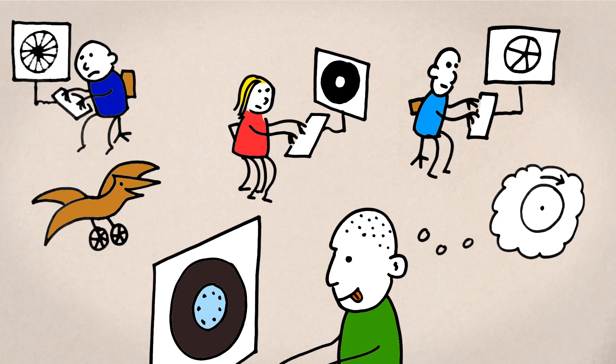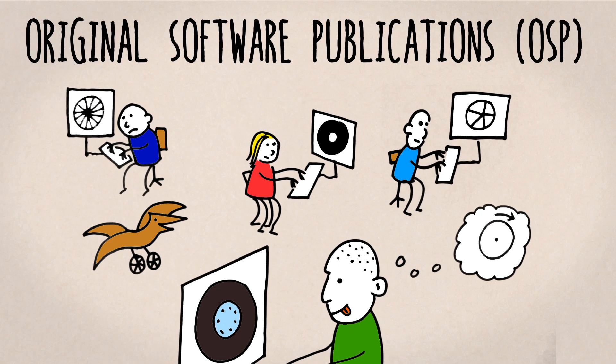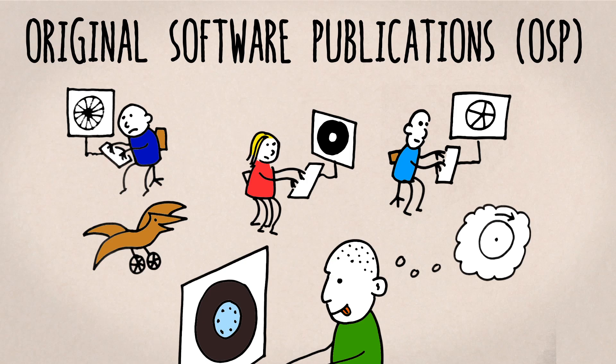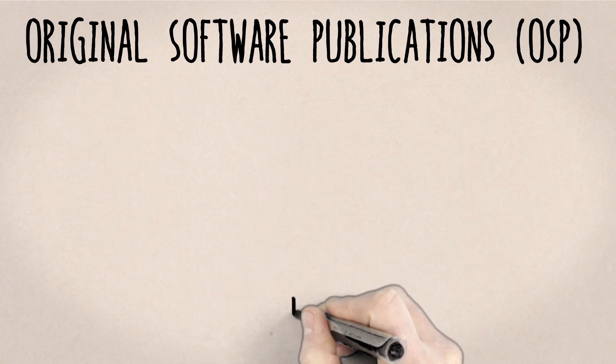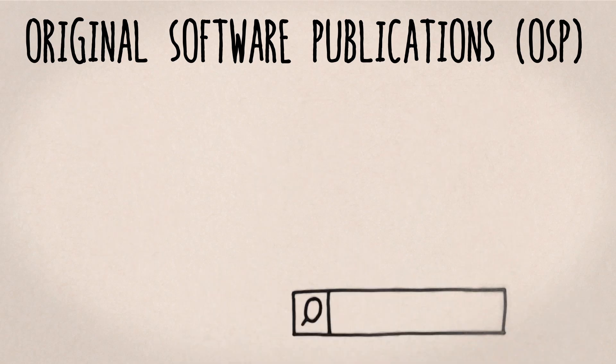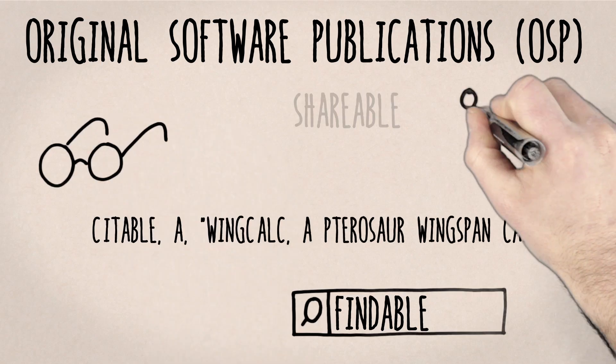This is why we are introducing Original Software Publications, a standard scientific publishing format that makes it easier to understand the scope and purpose of your software and makes it findable, citable and shareable.